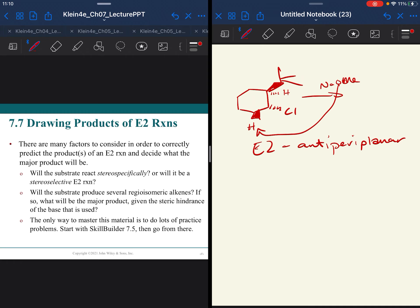So when you are going to predict the product, when you're drawing them or when you're approaching a multiple choice question, like you would see on our exams, you want to start going through a mental checklist. Look at your substrate. Is it primary, secondary, or tertiary? This might lead you to SN2 or E2 right away.